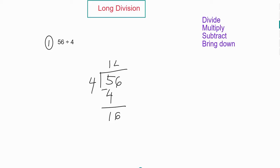Four goes into 16 four times. Four times four is 16, and then subtract gives you zero. That means the answer to 56 divided by 4 is 14.